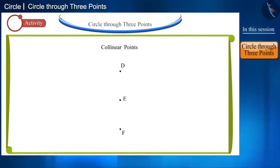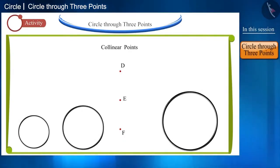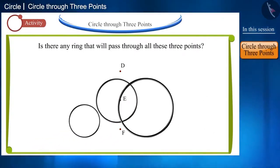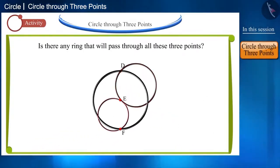Let us see in how many ways we can place the rings on these three points. Is there a ring that will pass through all these three points? No, there is no ring that will pass through all these three collinear points.